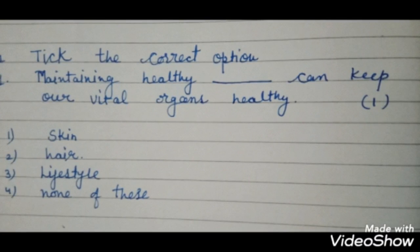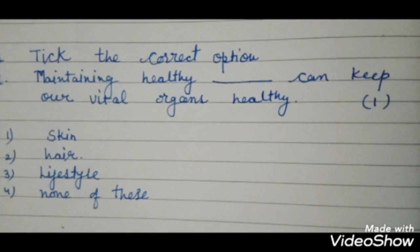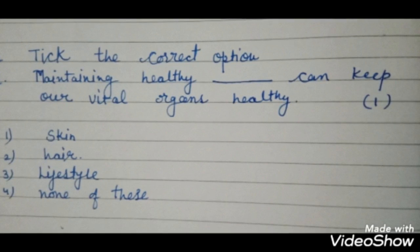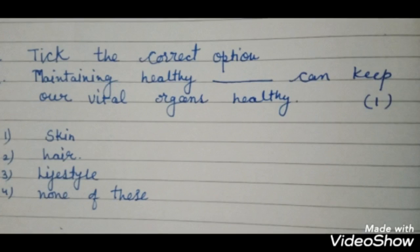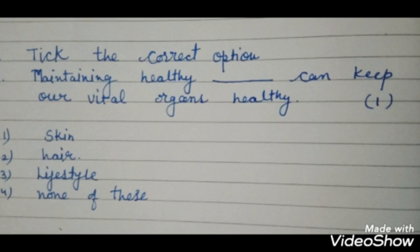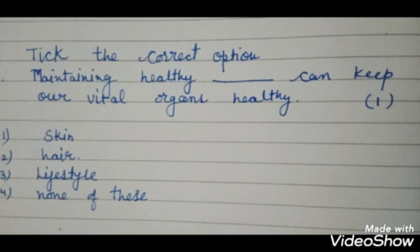You will get two minutes for each objective question. For example, maintaining healthy space can keep our vital organs healthy. Options are skin, hair, lifestyle, none of this. So you have to tick the correct answer and submit it.